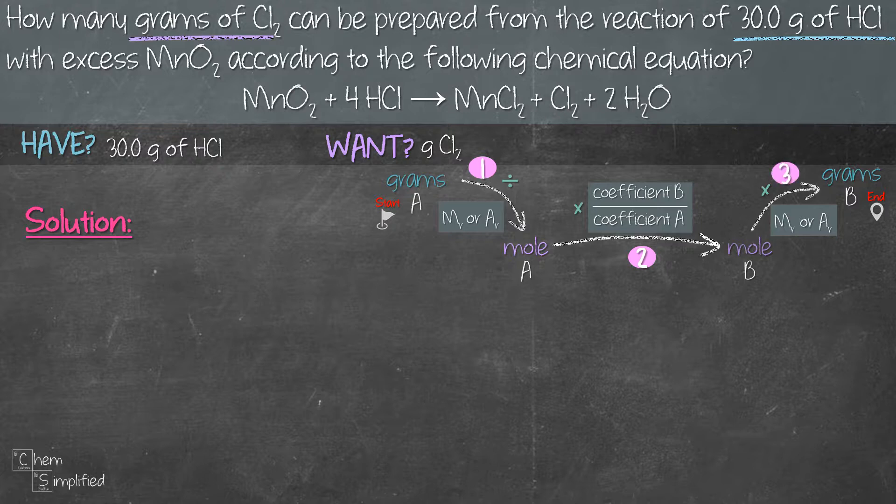A in this case is HCl, B in this case is Cl2. A is what we're given, B is what we need to find.